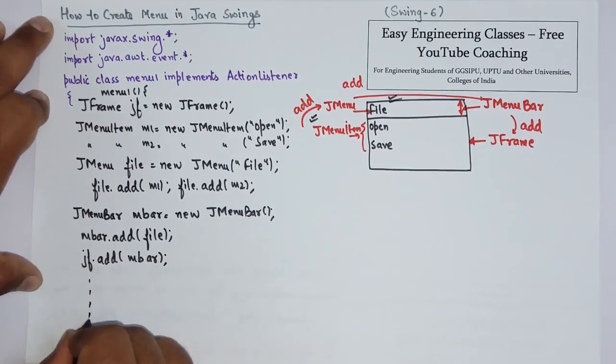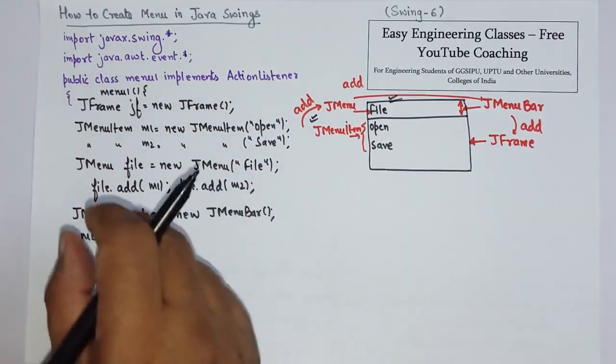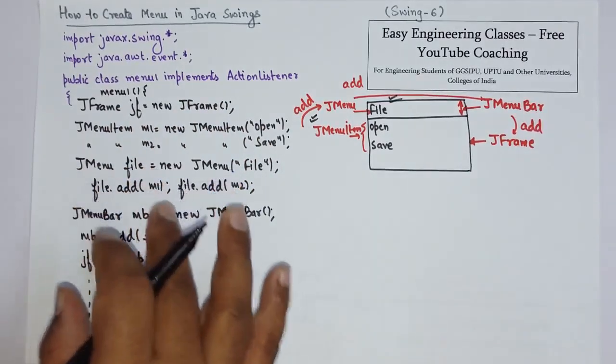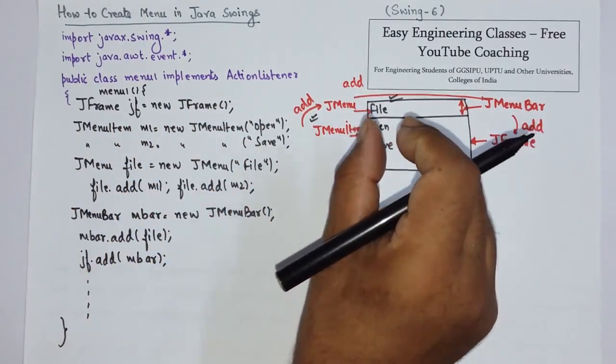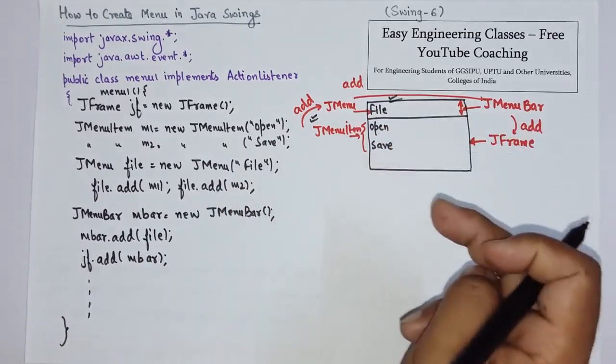So this is the code for creating menus in Java swings. Then you can use event handling to open certain dialog boxes or perform certain actions on the click of these menu items.